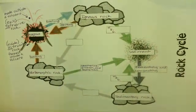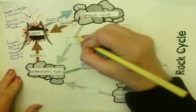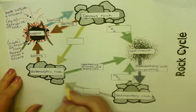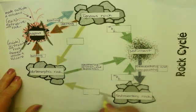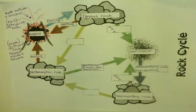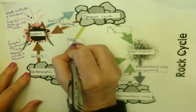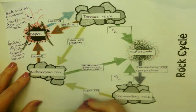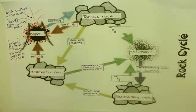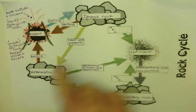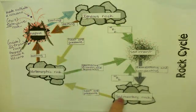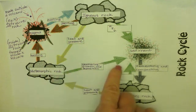The last two arrows explain how we get a metamorphic rock, and those are colored yellow. Both yellow arrows represent heat and pressure. If you take sediment and add heat and pressure, you make a metamorphic rock. If you take an igneous rock and add heat and pressure, you also make a metamorphic rock. If it starts melting, it becomes magma; if it's sedimentary and you add heat and pressure, it becomes metamorphic.